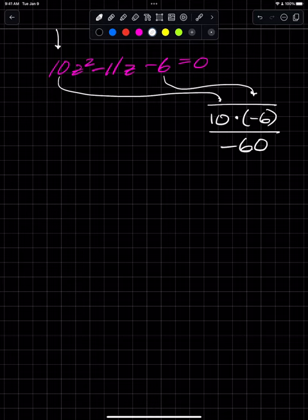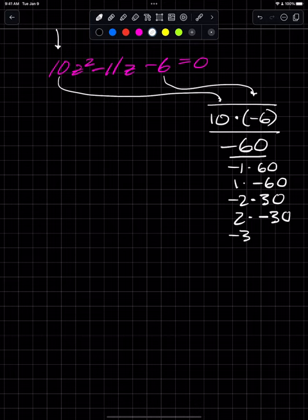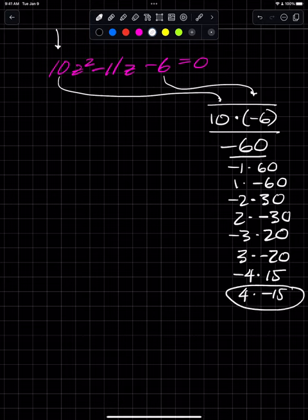Now I use the exact same method. I'm going to find factored pairs of negative 60. Negative 1 times 60, 1 times negative 60, negative 2 times 30, 2 times negative 30, negative 3 times 20, 3 times negative 20. Haven't found anything yet. Negative 4 times 15, that's not it but it's close.